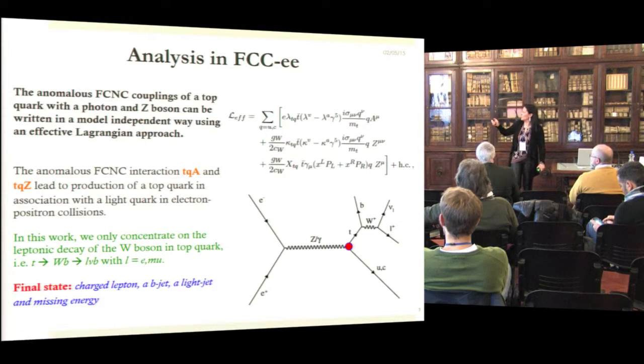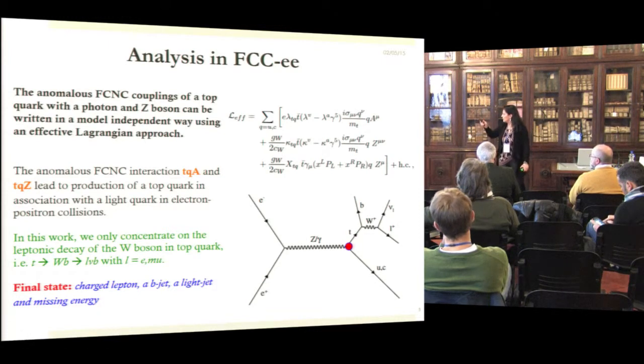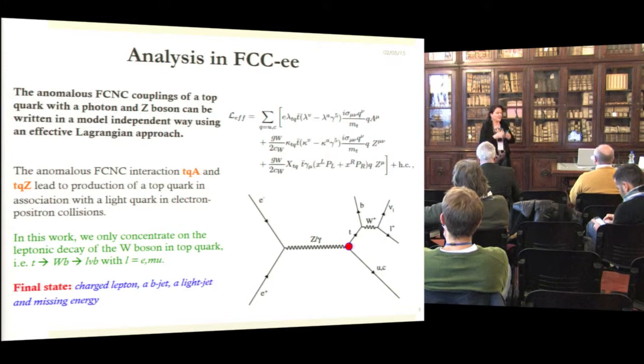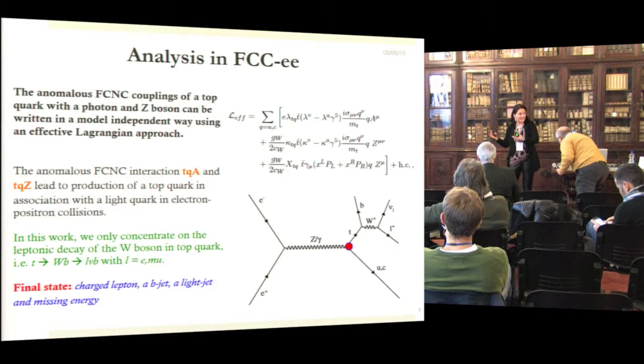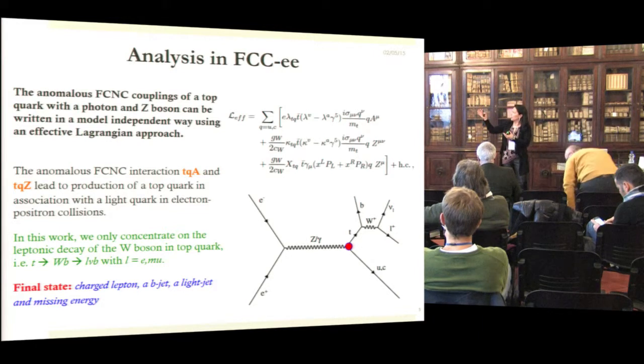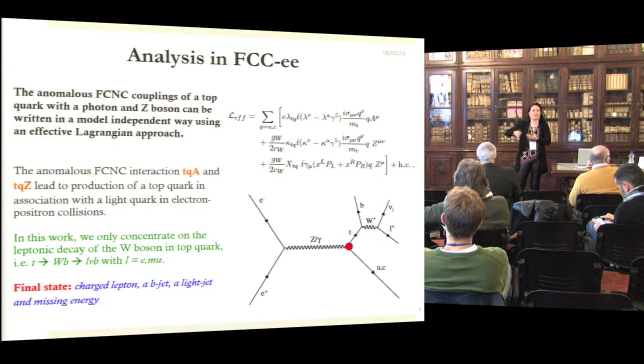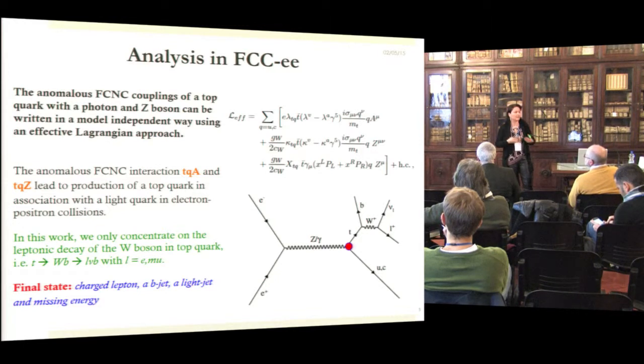So there is some work being done on the Lagrangian that we can use for this kind of studies and vertices. In this case this is the simplest one that we can imagine, and then you will see a little bit more complex up to the idea of using dimension six operators and allowing even more than one anomalous vertex.